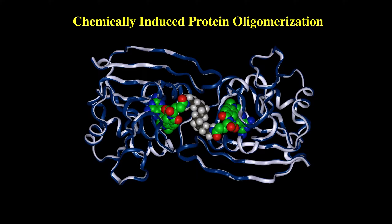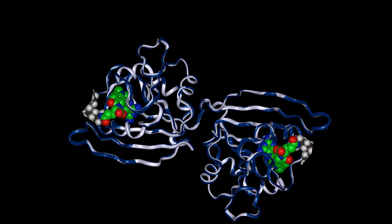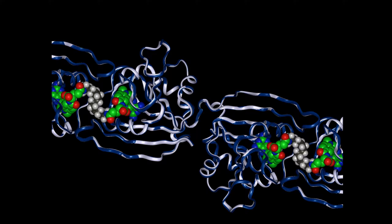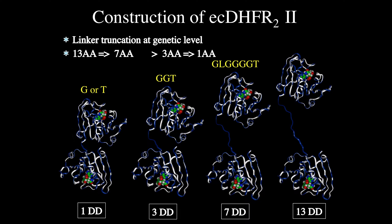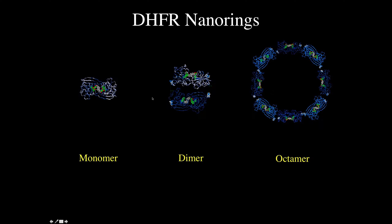We then asked: could we fuse two DHFR proteins together as a fusion protein to create a bivalent protein? Adding our dimerizer would allow us to assemble these into structures. We used proteins with engineered peptide linkers of different sizes — from 13 amino acids down to a single amino acid. When we oligomerized those proteins with the dimerizer, we found that depending on linker length we could get various types of nano rings. With a 13 amino acid linker we got a dimer; with a one amino acid linker we got an octamer.